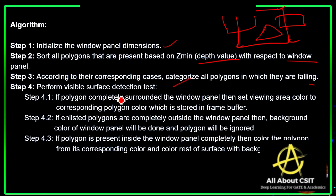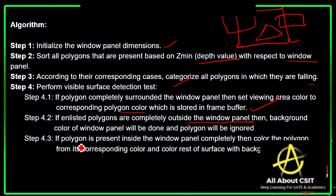For visible surface detection: if a polygon completely surrounds the window panel, set the viewing area color to the corresponding polygon color, which is stored in the frame buffer. If all listed polygons are completely outside the window panel, the background color of the window panel is applied and the polygon is ignored.